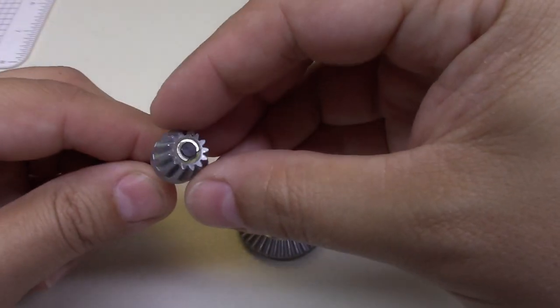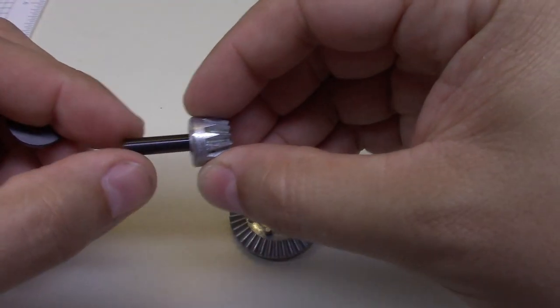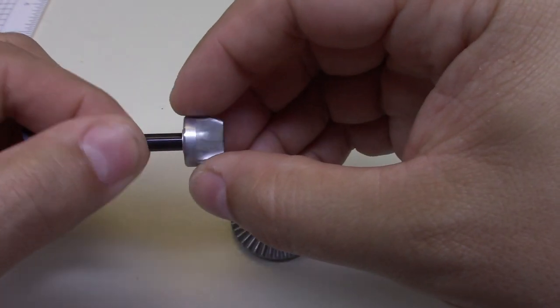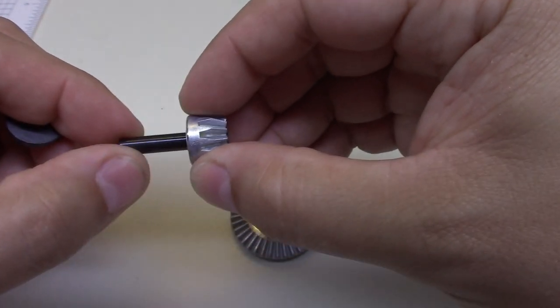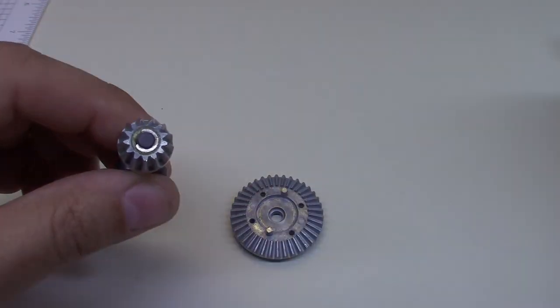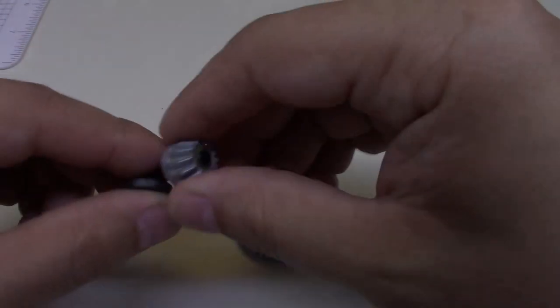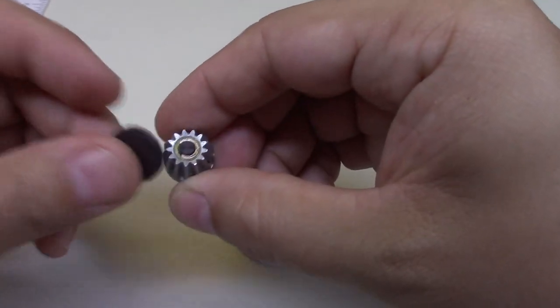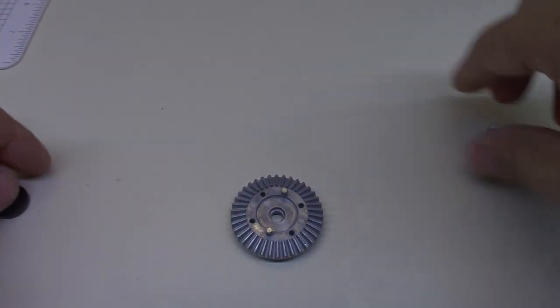Now the way that they have their pinion shaft is they have a steel shaft in the middle and it's held in with a circlip. On the upgraded one it's all one piece. So this is steel but this is not.